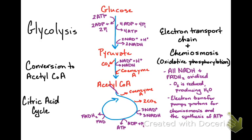Oxygen is required to pick up the electrons at the end of the chain. If you do not have oxygen, you cannot do this process. Without oxygen there's no reason to produce NADH and FADH2, so you don't need the citric acid cycle or the conversion of pyruvate to acetyl-CoA. Conversion to acetyl-CoA, the citric acid cycle, and the electron transport chain are all parts of aerobic respiration because oxygen must pick up the electrons at the very end, becoming water. This allows NADH and FADH2 to be stripped of electrons so they can return to the citric acid cycle and pick up more.